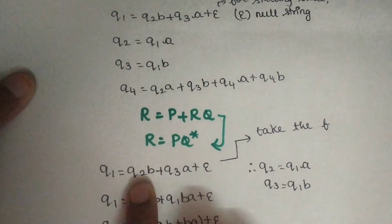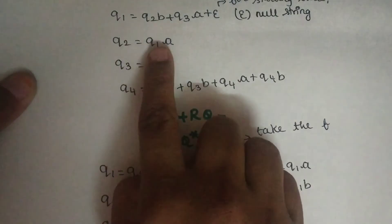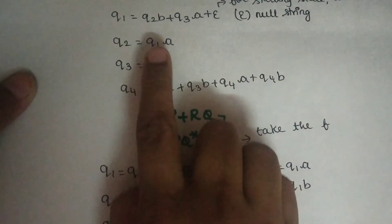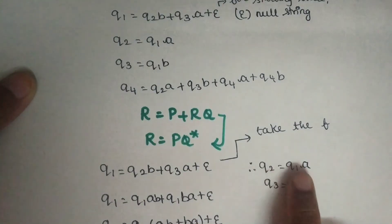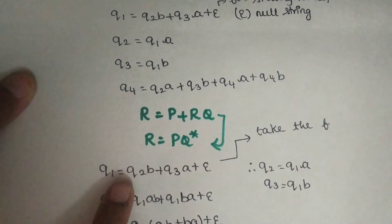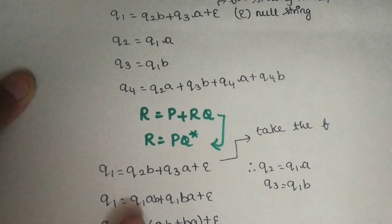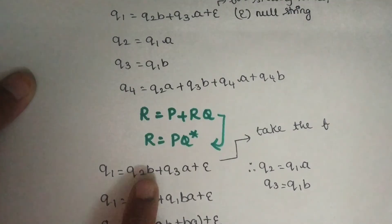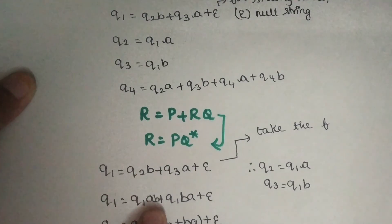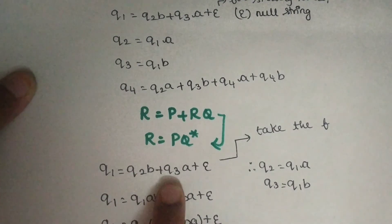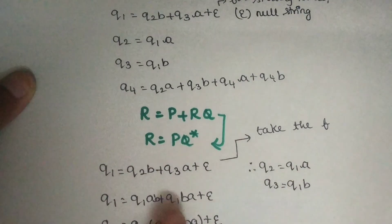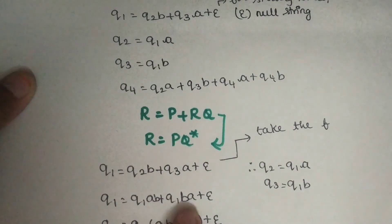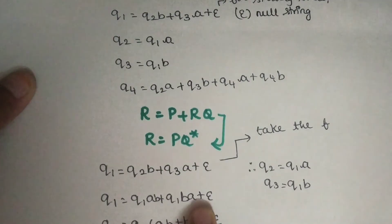Q2 and Q3 are here — we have to substitute these two states. Q2 is equal to Q1A. Q3 is equal to Q1B. So substituting: Q1 equals Q1A times B plus Q1B times A plus Epsilon.